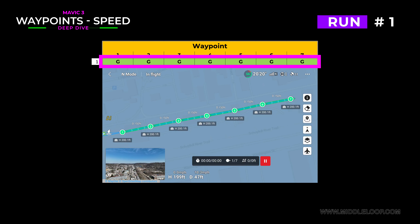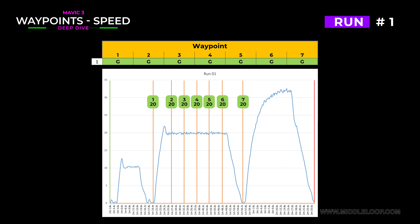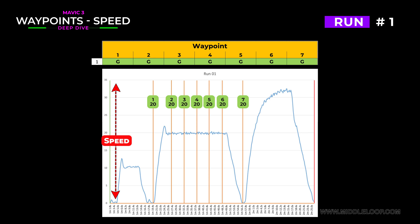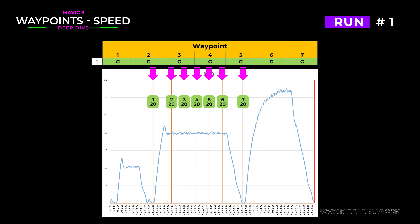As we said, we ran the mission 8 times. On the first run, we simply set all the waypoints to the global speed, which again is set to 20 miles per hour. Here's a chart of the mission that we created by downloading the flight log. The x-axis across the bottom is time, and the y-axis on the left is speed. Here's 10 miles per hour, 20 miles per hour, and 30. The green line is where we hit the go button. The orange lines are where each waypoint is set.